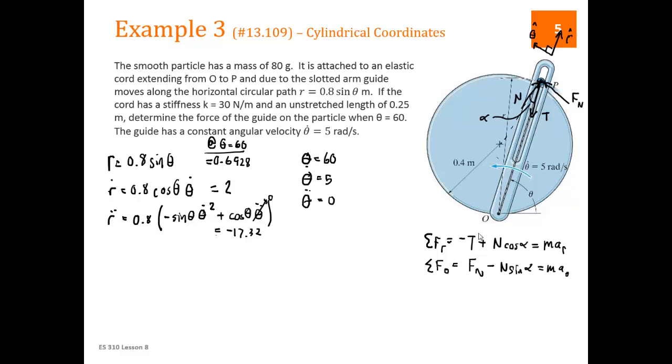Let's start with a r and a theta. We found all our r, r dots, all of that stuff. The expression for a r is equal to r double dot minus r theta dot squared. We know r double dot, so that's equal to negative 17.32 minus r, which is the 0.6928, times theta dot 5 squared. So that gives us negative 34.64.